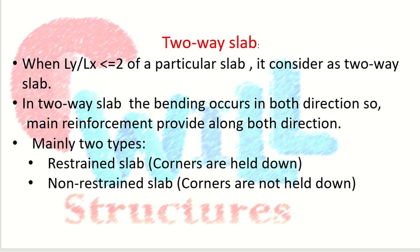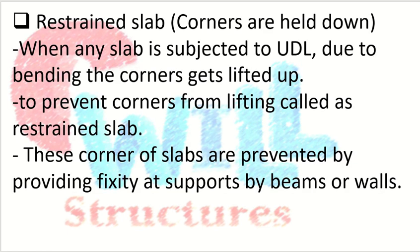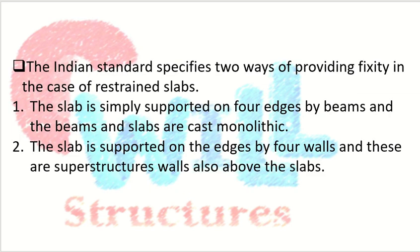In a two-way slab, bending occurs in both directions, so the main reinforcement is provided along both directions. There are basically two types of two-way slabs: restrained slabs, where corners are held down, and non-restrained slabs, where corners are not held down. When a slab is subjected to UDL, due to bending the corners tend to lift up, and to prevent this lifting we call it a restrained slab. Fixity at supports is provided by beams or walls.